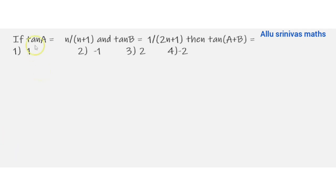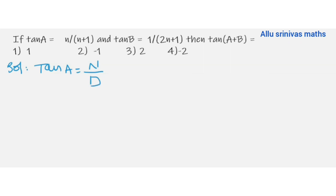This is a direct model: tan A equal to n by (n+1), tan B equal to 1 by (2n+1), then tan(A+B) equal to π/4. Same condition, same process. Tan A equal to numerator by denominator; tan B condition satisfied — denominator minus numerator by denominator plus numerator — go to answer: A plus B equal to π/4.